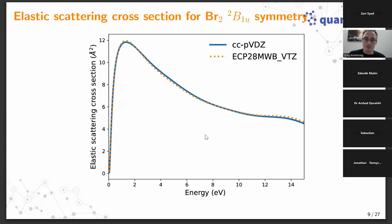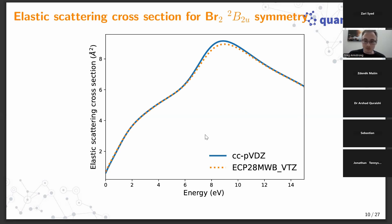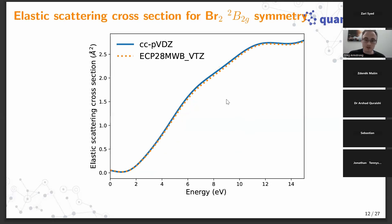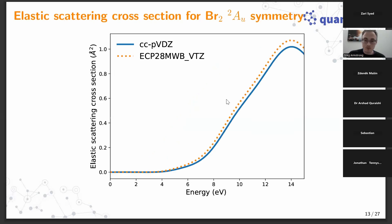Looking at the other symmetries: for B1U, things look excellent with good agreement across all energies. For B2U, there are tiny differences maybe around 9 eV but otherwise very good. B1G shows some differences, but it makes quite a small contribution to the overall cross section. B2G generally looks very good. For AU, some differences are visible but the magnitude of the cross section for this symmetry is quite small, so these differences are not particularly significant overall.